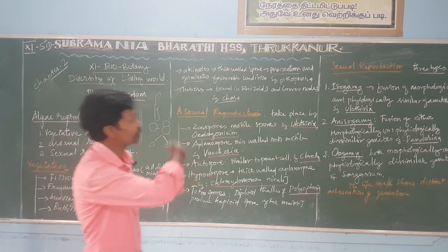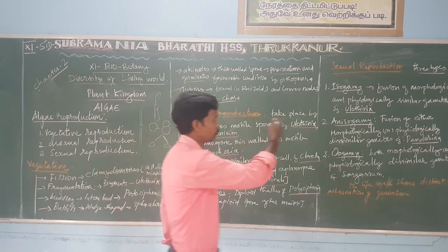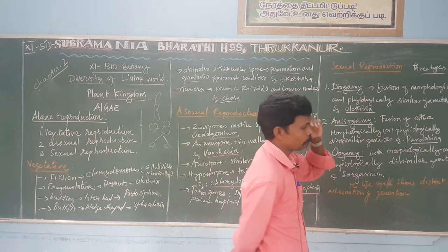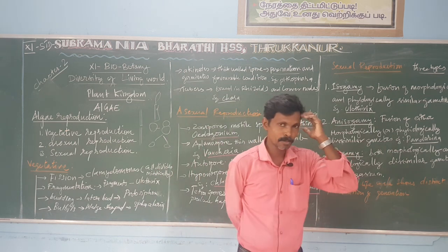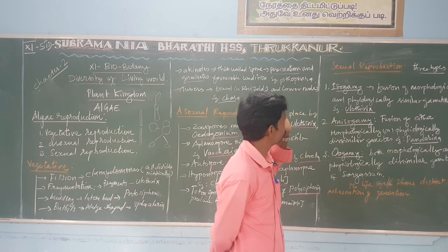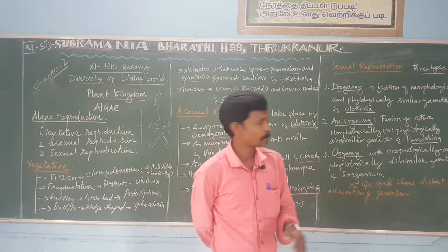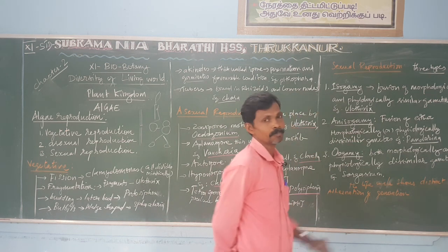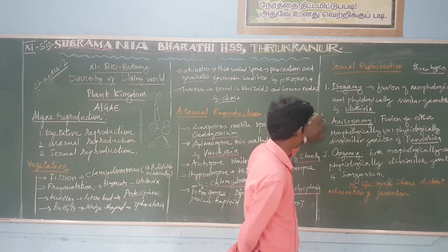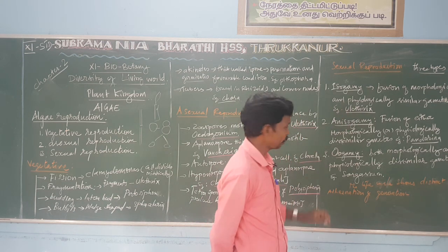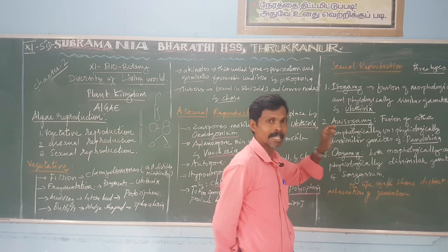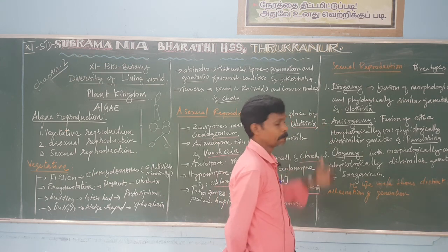The third type is sexual reproduction. There are three types of sexual reproduction: number one — isogamy; number two — anisogamy; number three — oogamy. What do you mean by isogamy, anisogamy, and oogamy?